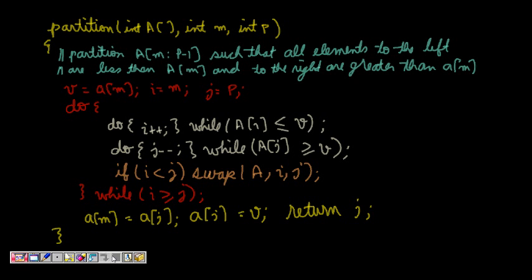Our next question is regarding partitioning an array. Partitioning means I am not sorting the array but dividing it such that in the left part all elements are less than the pivot element, and in the right part all elements are greater. Those left and right parts need not be sorted — the only criteria is that the left subpart has elements less than the pivot and the right elements are greater than the pivot.